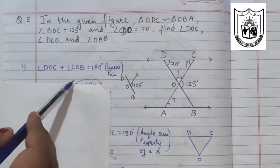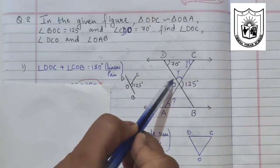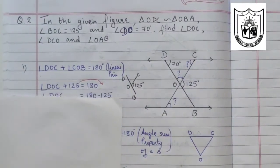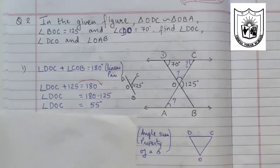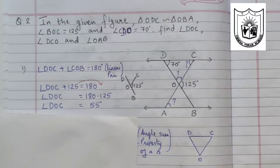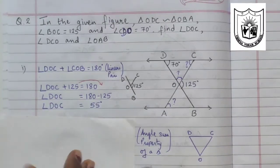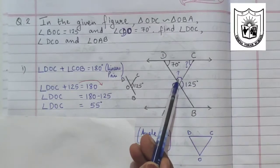DOC is unknown. COB is 125 degrees, so let me substitute that here. 125, if you transpose to the other side it becomes negative. So angle DOC is 55 degrees. We have already found out DOC. This angle measures 55 degrees.